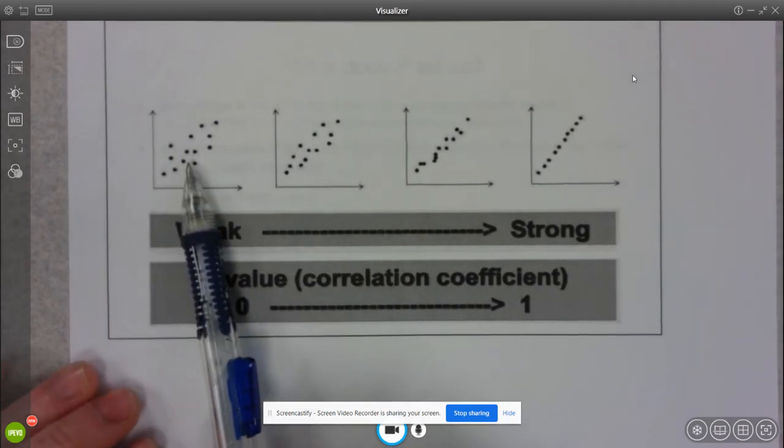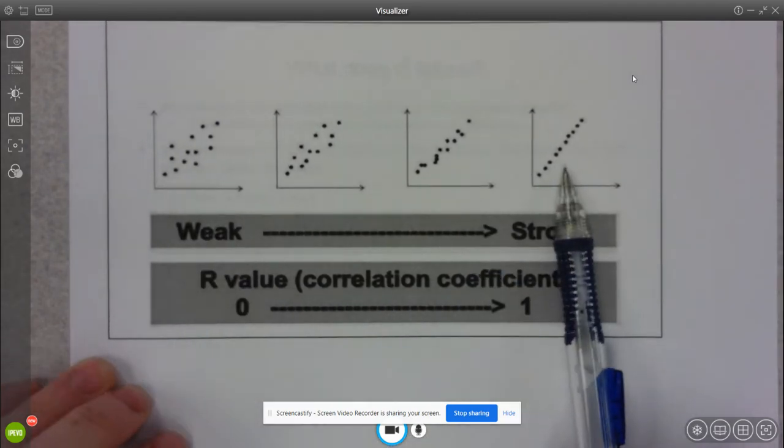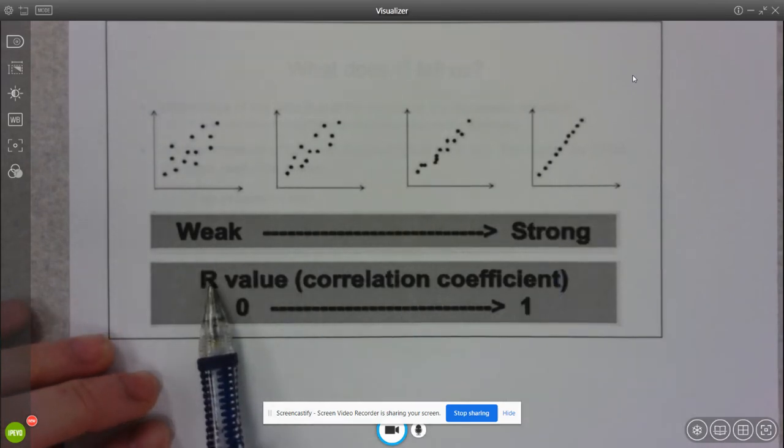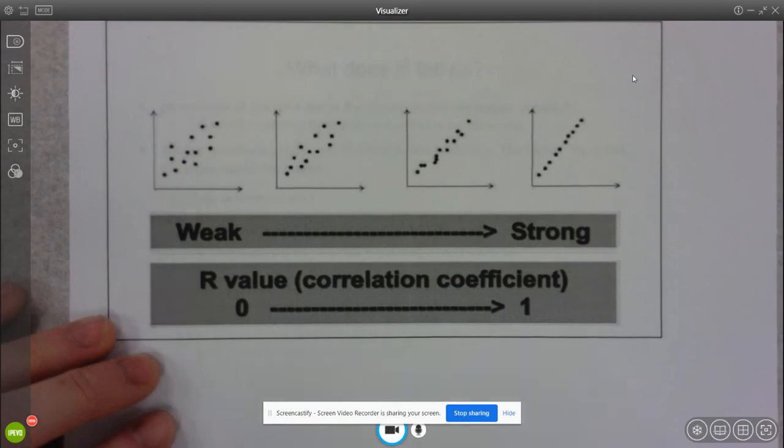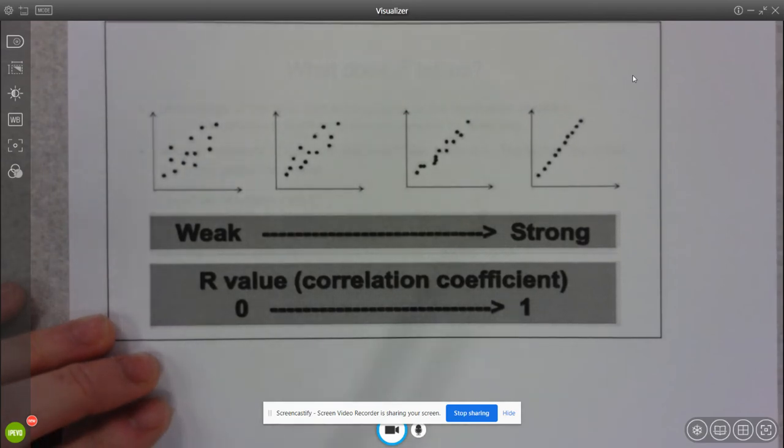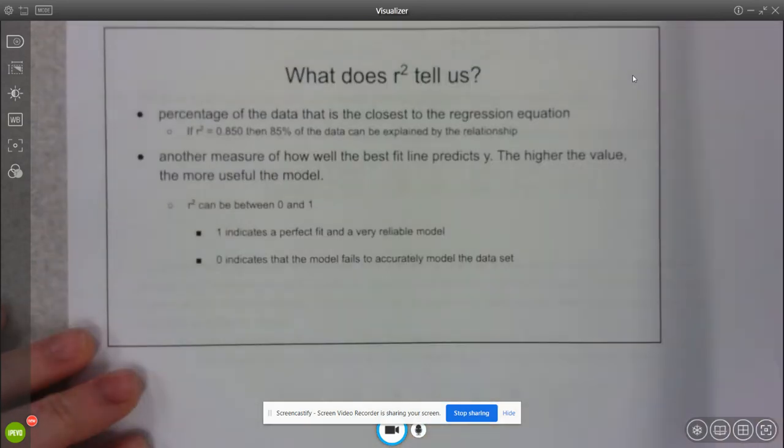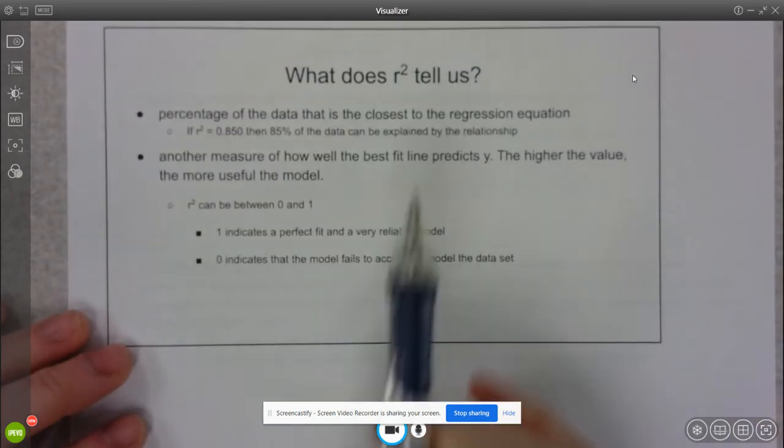So these should look similar to what we looked at yesterday. Weak, they're very spread out, strong, they're very close to being in a line. And again, I'm looking at that r value only if it's linear.